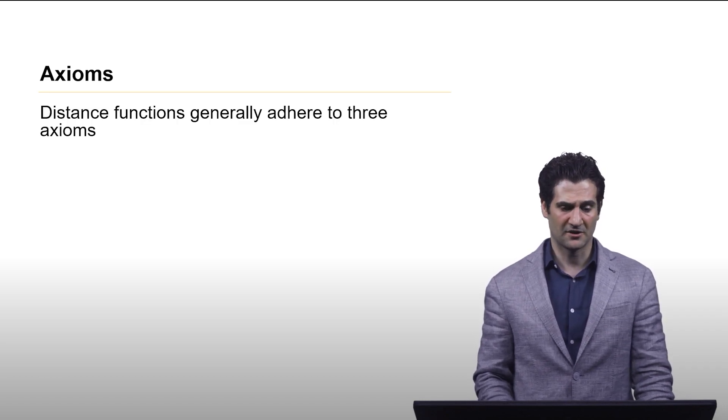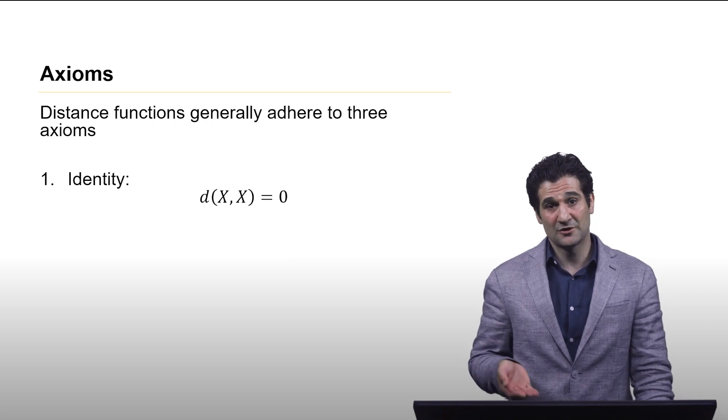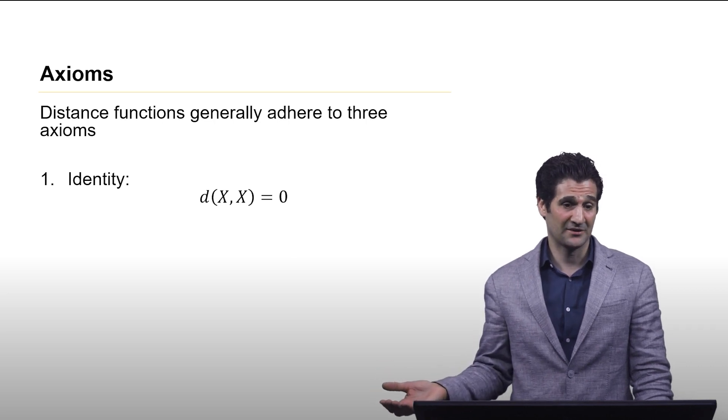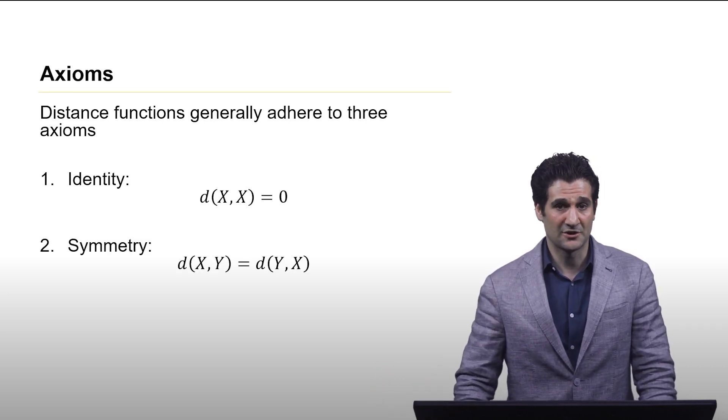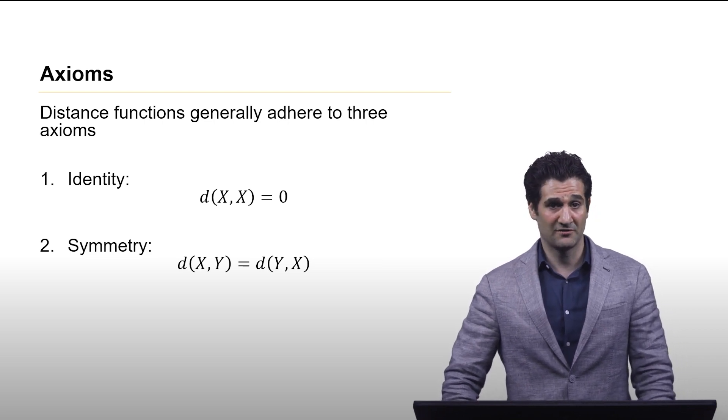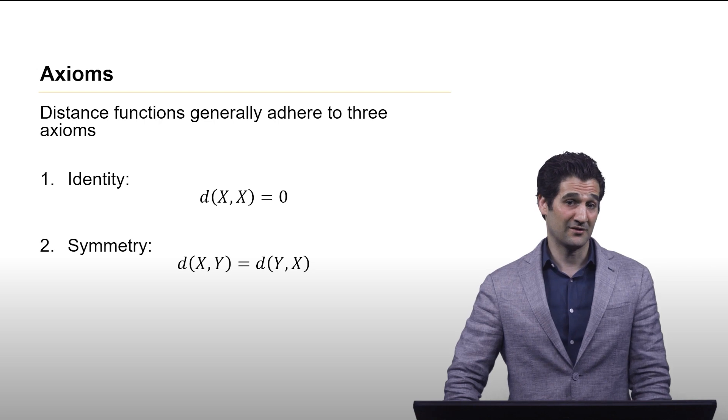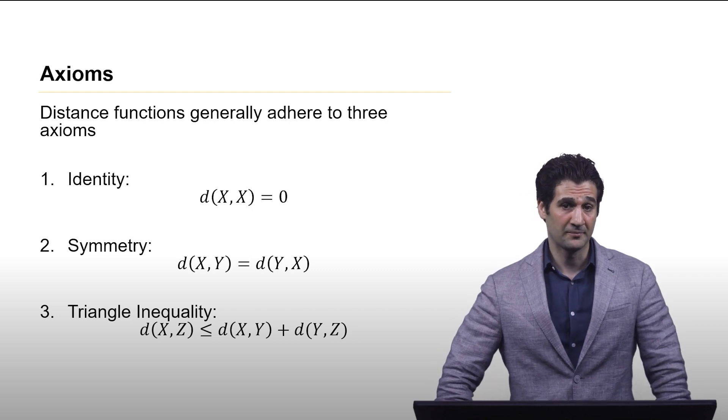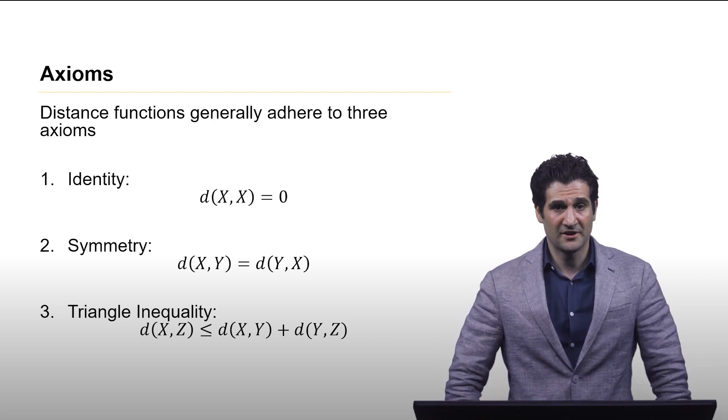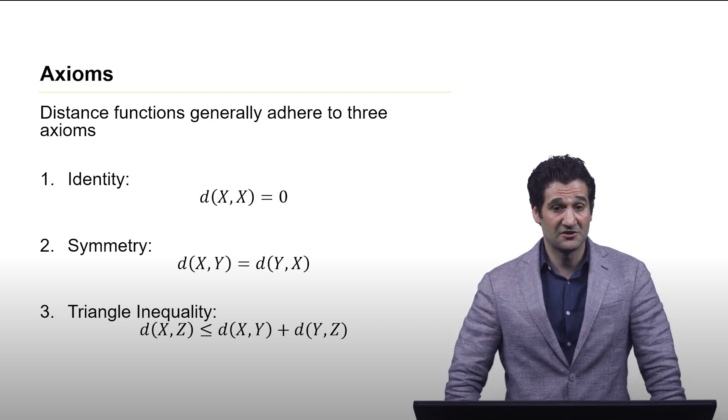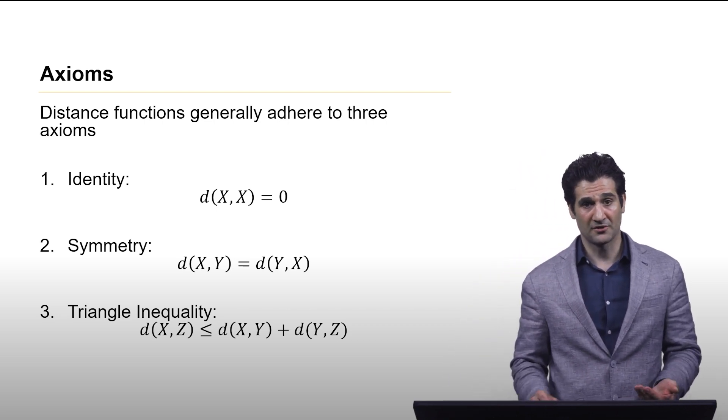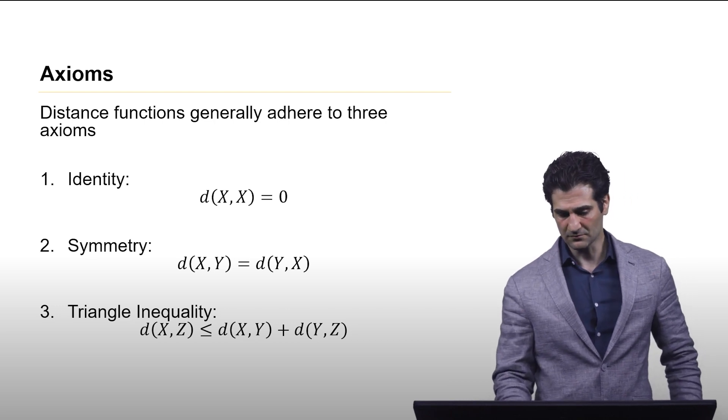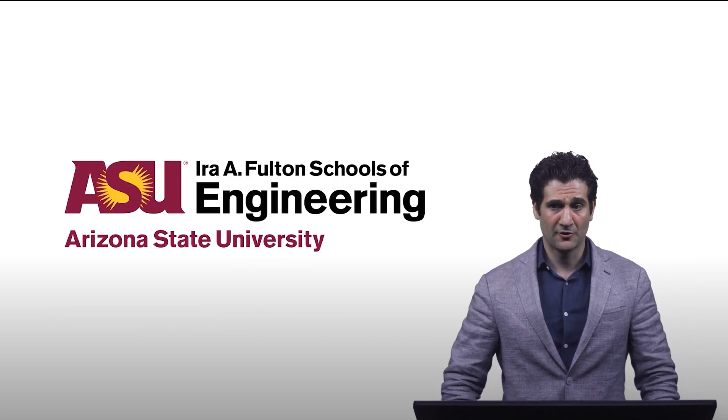There's three axioms of distance functions that are really quite important to adhere to. The first is identity - the distance between anything and itself should be zero. The second is symmetry - the distance between vectors x and y should equal the distance between vectors y and x. The third is the triangle inequality, which means that the distance between x and z is the shortest path, so there's no way it could take some detour point between the two and come up with a shorter distance.